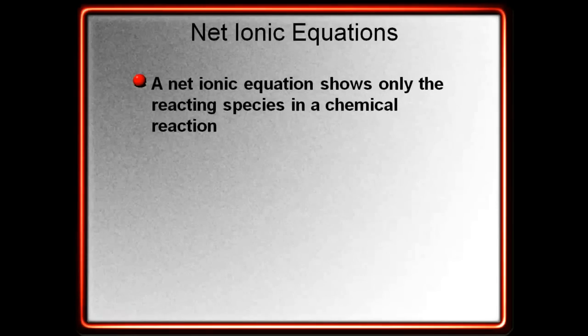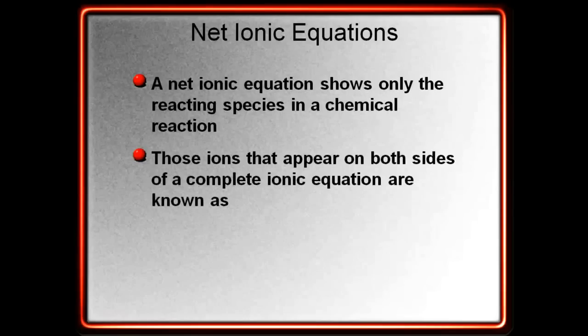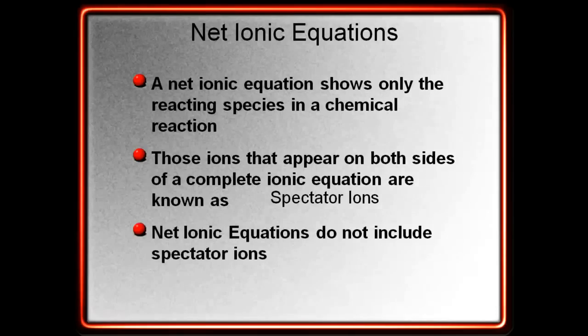Well, a net ionic equation shows only the reacting species in a chemical reaction. So, those ions that appear on both sides of a complete ionic equation are not included in net ionic equations. These ions that appear on both sides are known as spectator ions. They're kind of there just hanging out, watching everything happen, but they're not actually actively involved in the bonding or the reaction itself. So, net ionic equations will not include these spectator ions.